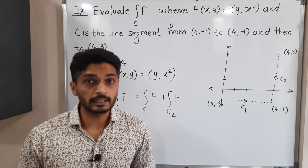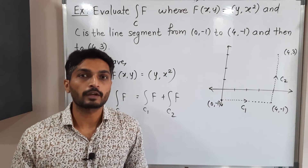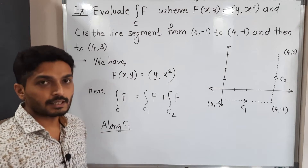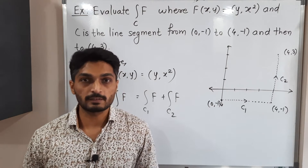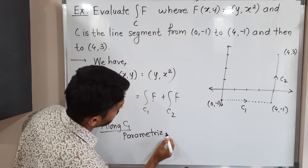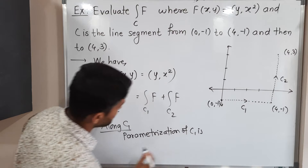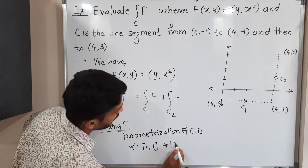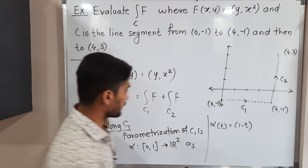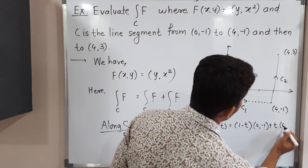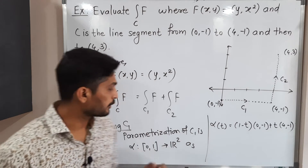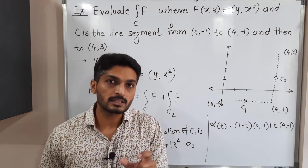First we find the line integral of f over C1, then over C2. Our first task is to find the parameterization of C1, which is a straight line. The parameterization alpha is defined from the closed interval [0, 1] to ℝ². We know that alpha(t) equals (1 - t) times the starting point plus t times the ending point. It is always defined on the closed interval [0, 1].